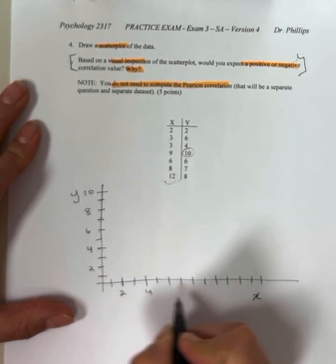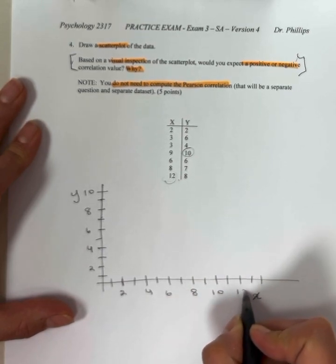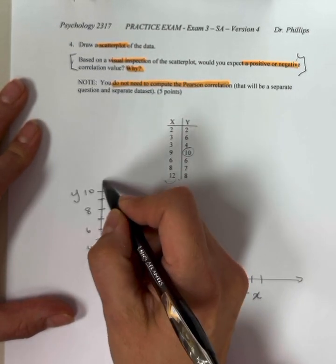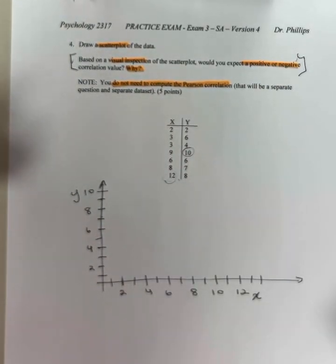So, 2, 4, 6, 8, 10, 12. Oh, I went further than I needed to. And now I plot them.